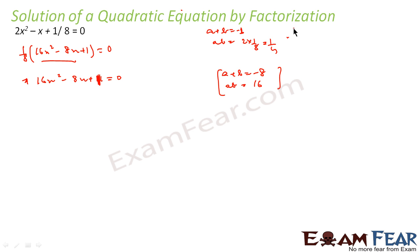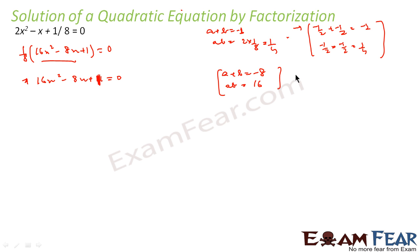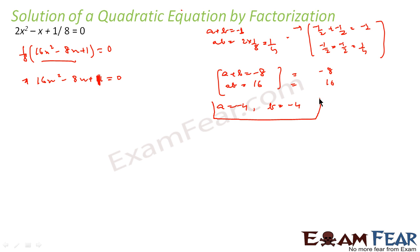For me this is easier. The other way I could do is: minus 1/2 plus minus 1/2 equals minus 1, and minus 1/2 times minus 1/2 equals 1/4 — I can do it that way also. But I don't like the 1/4 term, so I made it this way. In this case, a plus b equals minus 8 and a times b equals 16. So if I take a equals minus 4 and b equals minus 4, this satisfies my condition.